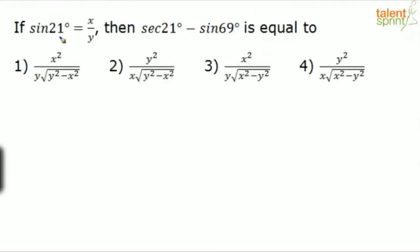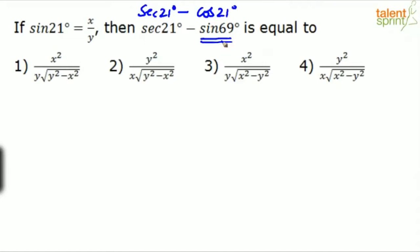He has given sine 21 degrees as x/y and is asking us to find secant 21 minus sine 69. Let secant 21 remain as it is. Sine 69 can be taken as cos 21, because sine 69 is sine of (90 minus 21), which equals cos 21.